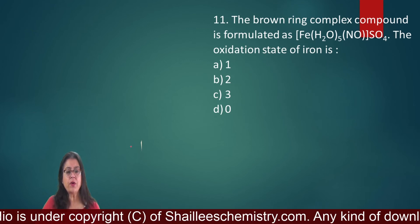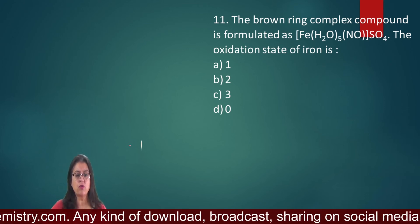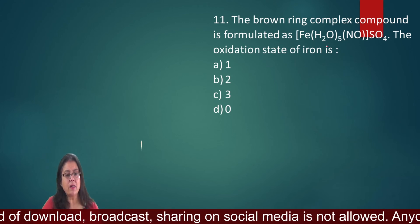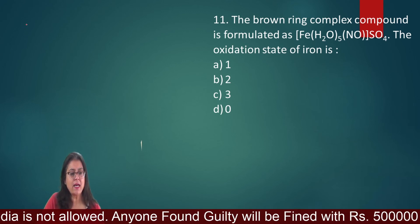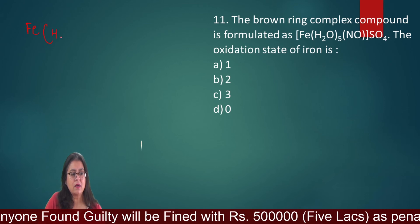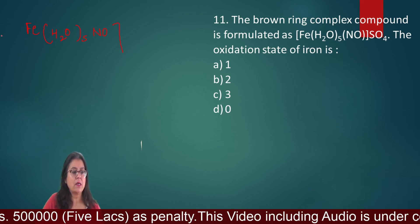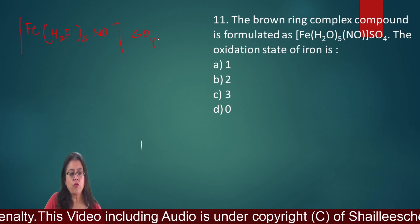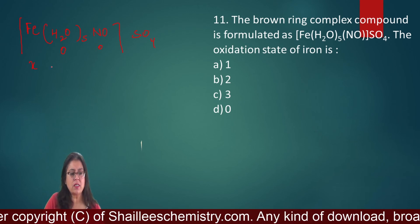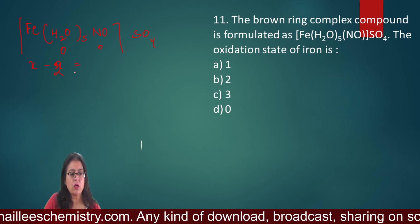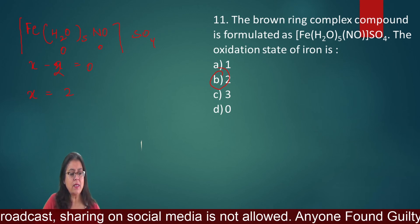Question number 11: The brown ring complex is formulated as [Fe(H₂O)₅NO]SO₄. To find the oxidation state of iron: SO₄ has a charge of -2, NO is taken as neutral (0), H₂O is also 0. So X - 2 = 0, giving X = 2. The correct option is B.